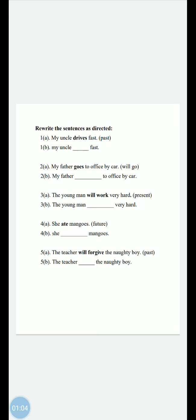She ate mangoes - this is past tense, you have to convert it into future: she will eat mangoes. Simple. The teacher will forgive the naughty boy - this is future tense, you have to convert it into past tense: the teacher forgave the naughty boy.